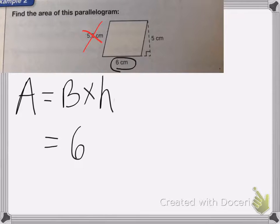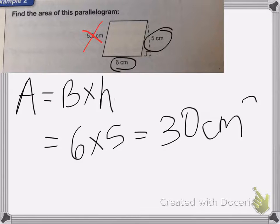Base is 6. Height is 5. 6 times 5, which is equal to 30 centimeters, and remember to square it, because when we're dealing with area, we always square the centimeters.